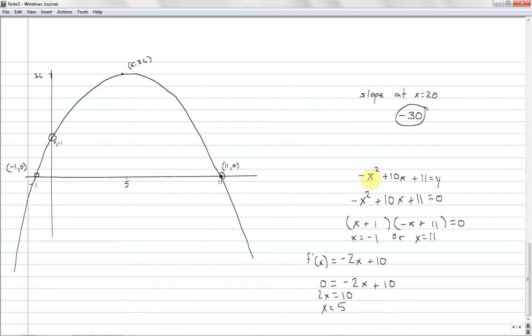So I plug in here, negative 5 squared is 25, or sorry, negative 25, plus 10 times 5 is 50, so I'm at 25 right now, plus 11 is 36. So that's where this 36 comes from. So maybe I'll write that out, negative 5 squared plus 10 times 5 plus 11 equals 36. And that's all you need to know to graph this parabola.